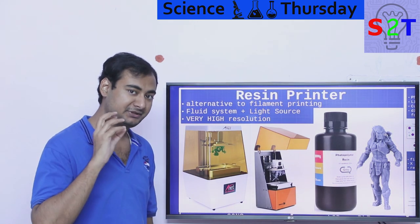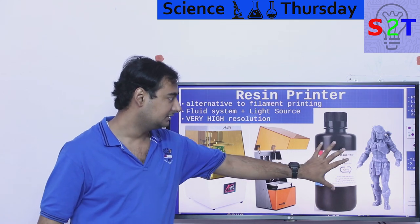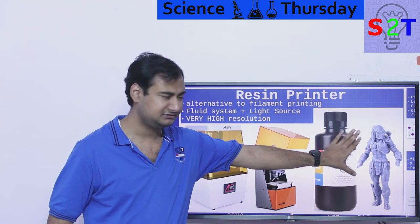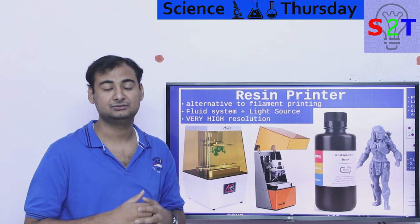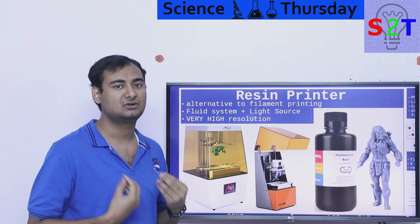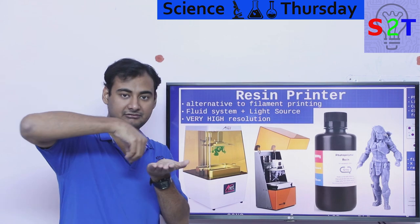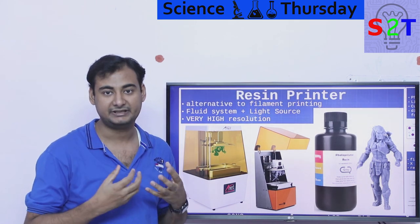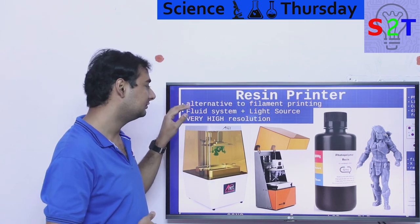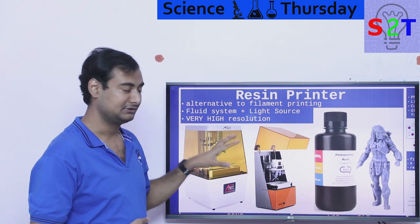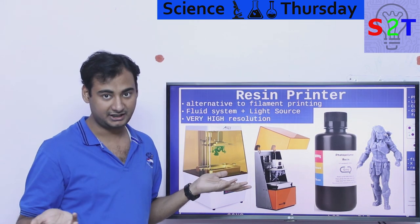If you're making something small, like a miniature model, a few centimeters high, filament printing does not have the resolution. The way it works simply does not allow it for very small parts, so people go for this fluid system and a light source.